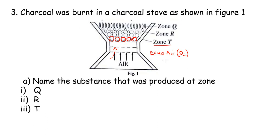So the charcoal in zone T will actually undergo complete combustion because there is enough oxygen to produce our carbon dioxide gas. So in zone T there is enough air, so there is complete oxidation to produce carbon dioxide gas.